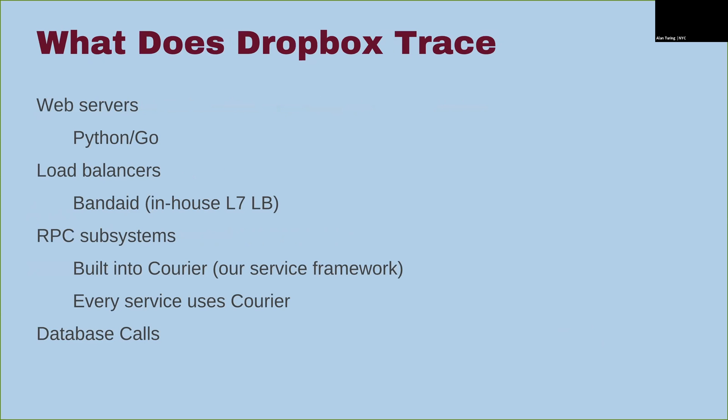What do we trace at Dropbox? We trace our web servers — Python and Go are our main languages. We use our load balancer Band-Aid, which is an in-house L7 load balancer. For RPC systems, we use Courier, which is our service framework, and every service uses Courier, so every service by default gets tracing. And then database calls.